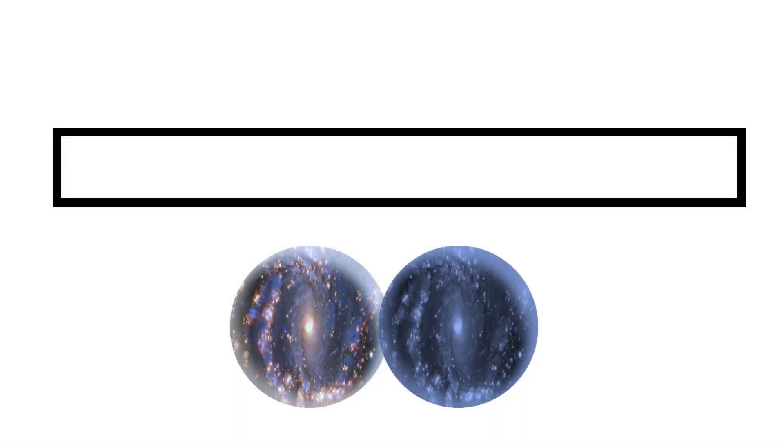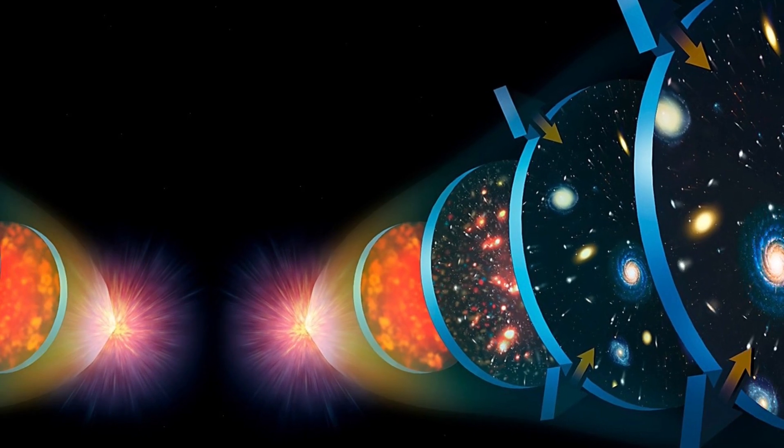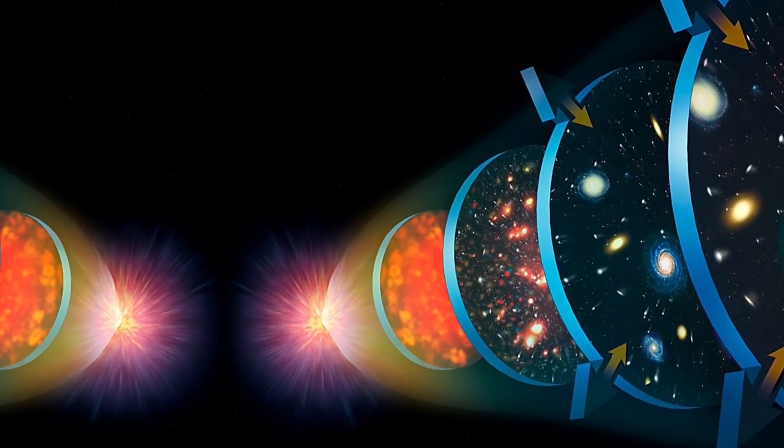Os físicos identificaram um conjunto de simetrias fundamentais na natureza. As três simetrias mais importantes são Carga. Se você inverter as cargas de todas as partículas envolvidas em uma interação para suas cargas opostas, obterá a mesma interação. Paridade. Se você olhar para a imagem espelhada de uma interação, obterá o mesmo resultado.